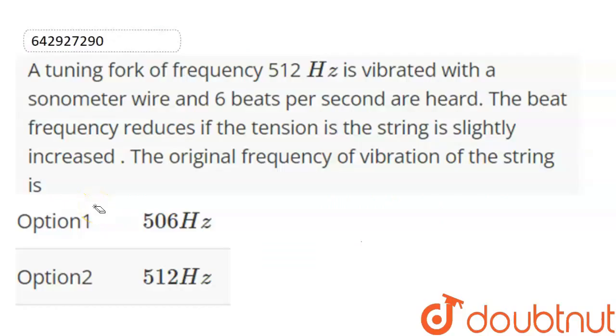A tuning fork of frequency 512 Hz is vibrated with a sonometer wire and 6 beats per second are heard. The beat frequency reduces if the tension in the string is slightly increased. The original frequency of vibration of the string is...